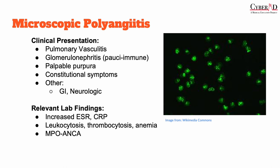To diagnose this condition, you primarily rely on clinical findings, along with laboratory and imaging studies. Inflammatory markers such as CRP and ESR are typically elevated. You can have leukocytosis, anemia, or thrombocytosis. However, the ANCA most commonly associated with this condition is an MPO-ANCA, or anti-myeloperoxidase ANCA, present in up to 75% of patients. A helpful mnemonic: you can't spell microscopic without MPO. This is a myeloperoxidase ANCA and is a P-ANCA.